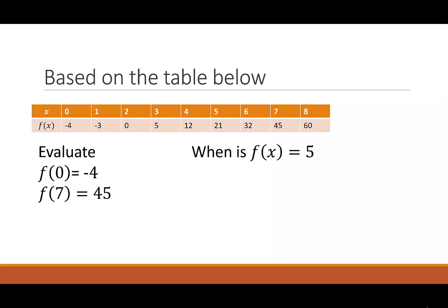If we want to go in the opposite direction, that says we know our output and we want to find our input. This time, I want to figure out when is f of x equal to 5. So I'm going to look at the bottom row, find the number 5, and then look up at the x value. That tells me that x is equal to 3.